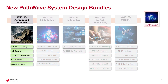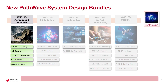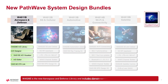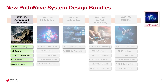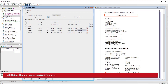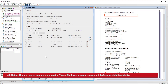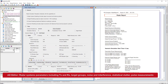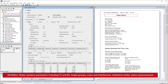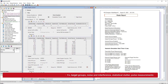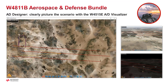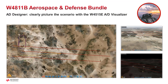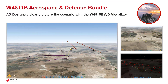The W4811B Aerospace Defense Bundle includes the new W4526E Aerospace Defense Library and incorporates the new Aerospace and Defense Designer, which delivers a paradigm shift in usability. The Aerospace and Defense Designer comprises the AD Editor for Scenario Configuration and the AD Visualizer W4515E to animate the scenario as it simulates.